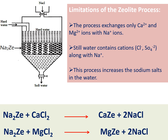In the last class we discussed briefly about the zeolite process. Zeolites are called Na₂Zd; they have a porous texture and two sodium ions on each molecule, loosely bounded on the surface. These sodium ions can be replaced by Ca²⁺ and Mg²⁺ present in the hard water. So we can replace all cations in the hard water by Na⁺ ions, but still the water contains anions like chloride, sulfate, and bicarbonate ions.